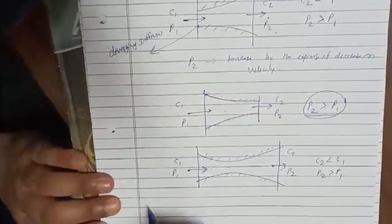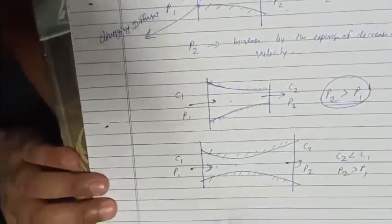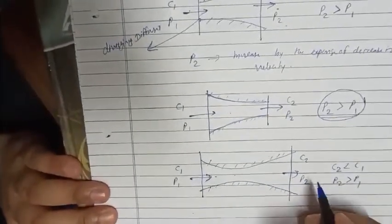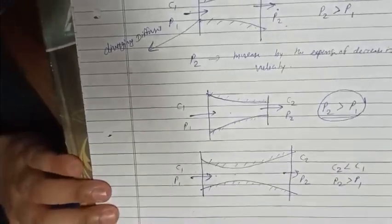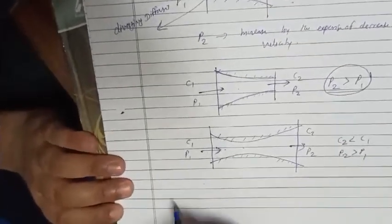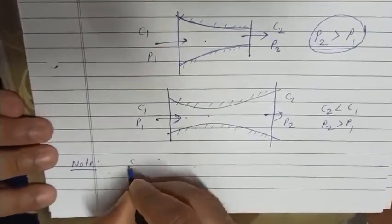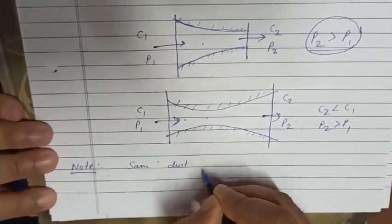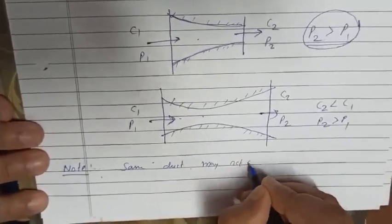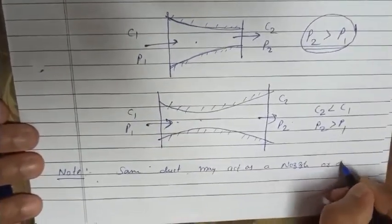The flow will follow the laws of fluid mechanics: mass, momentum, and energy conservation. The velocity increase or decrease, pressure change, and enthalpy change all follow the energy equation. The same device can act as a nozzle or diffuser depending on the exit condition.